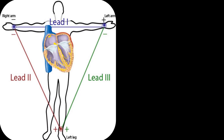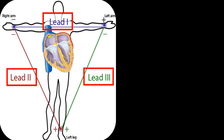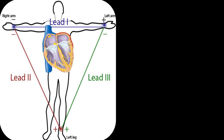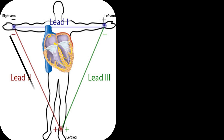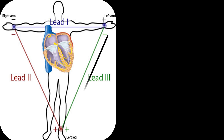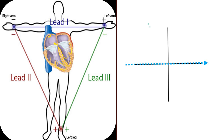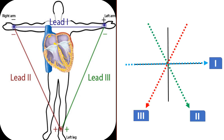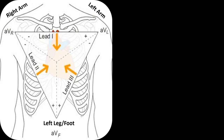The three bipolar limb leads are leads 1, 2, and 3. Lead 1 records electrical differences between the right arm negative electrode and left arm positive electrode. Lead 2 records electrical differences between the right arm negative electrode and left leg positive electrode. Lead 3 records electrical differences between the left arm negative electrode and left leg positive electrode. Plotting the three bipolar limb leads, you see this plot.